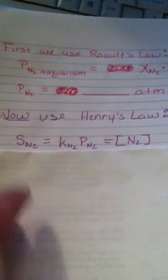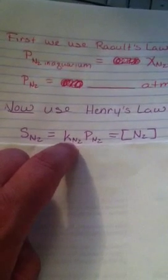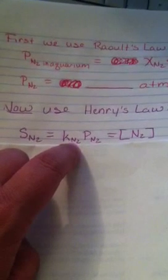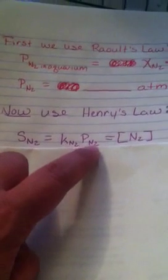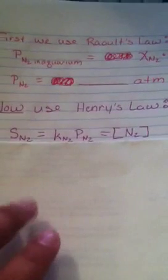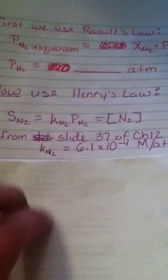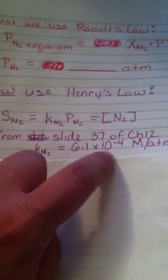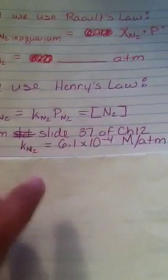So the solubility of nitrogen is gonna equal the Henry's Law constant for nitrogen, which we can also find on that same slide, which was slide 37, times the pressure of nitrogen that we calculated up here. And when I looked it up from this slide, the Henry's Law constant I got was 6.1 times 10 to the negative 4th moles per atmosphere.